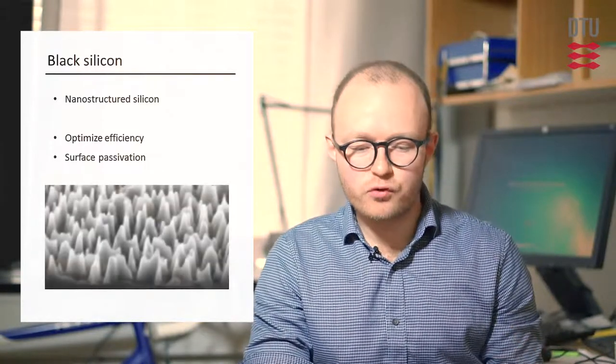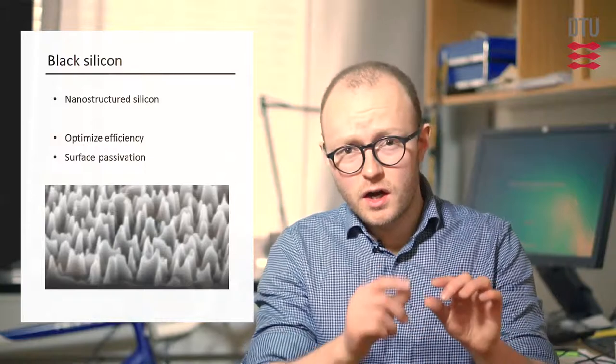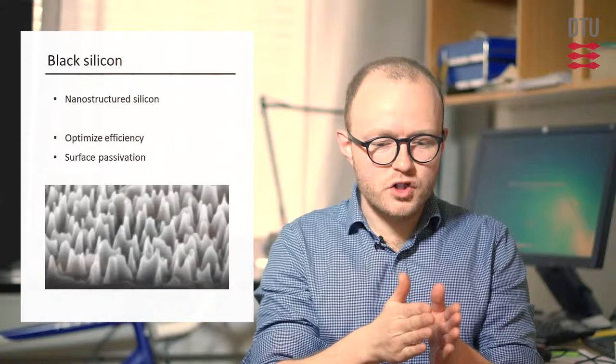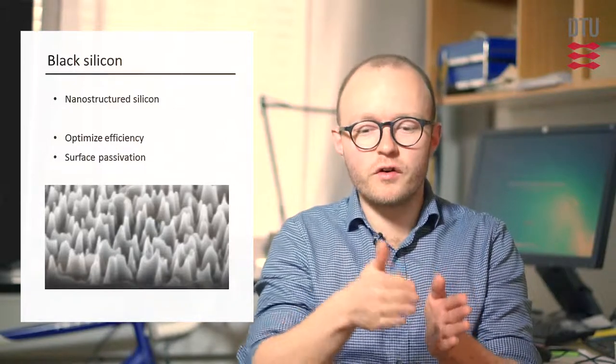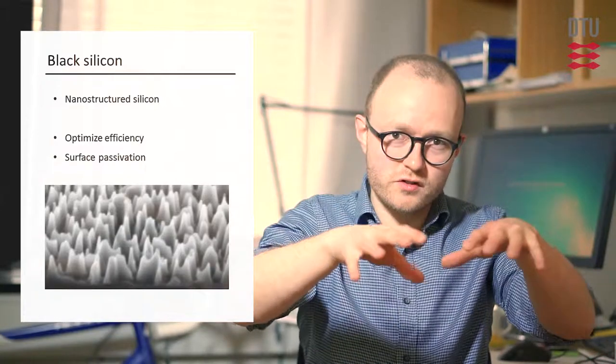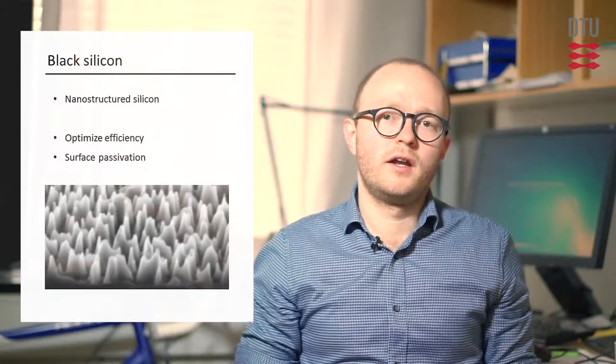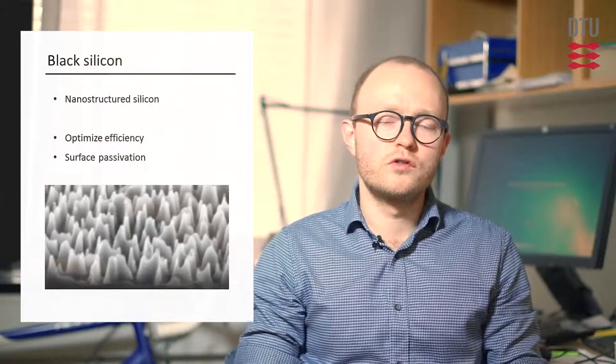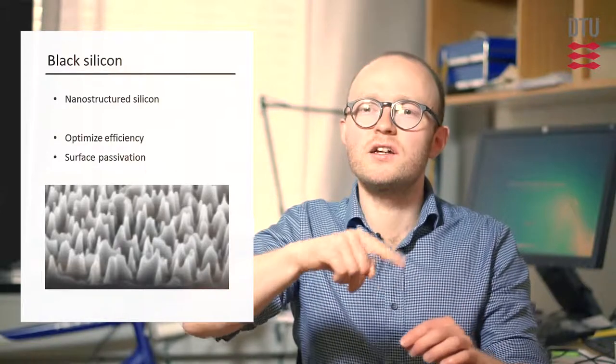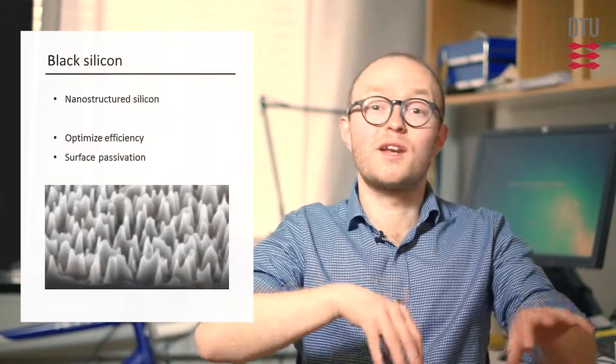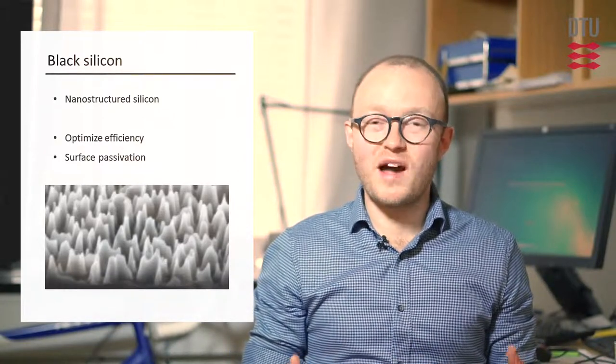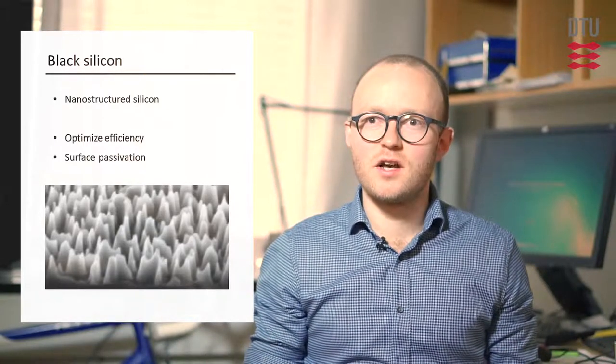We produce nanostructures that are 300 to 400 nanometers high or tall, and spaced or placed 300 to 400 nanometers apart from each other. So if you look at the surface of black silicon in an electron microscope, you'll see this big landscape of 300 to 400 nanometer conical-like hillocks that are placed in a random nature on the surface. And that's because our process is a quite simple one-step process with no masking.